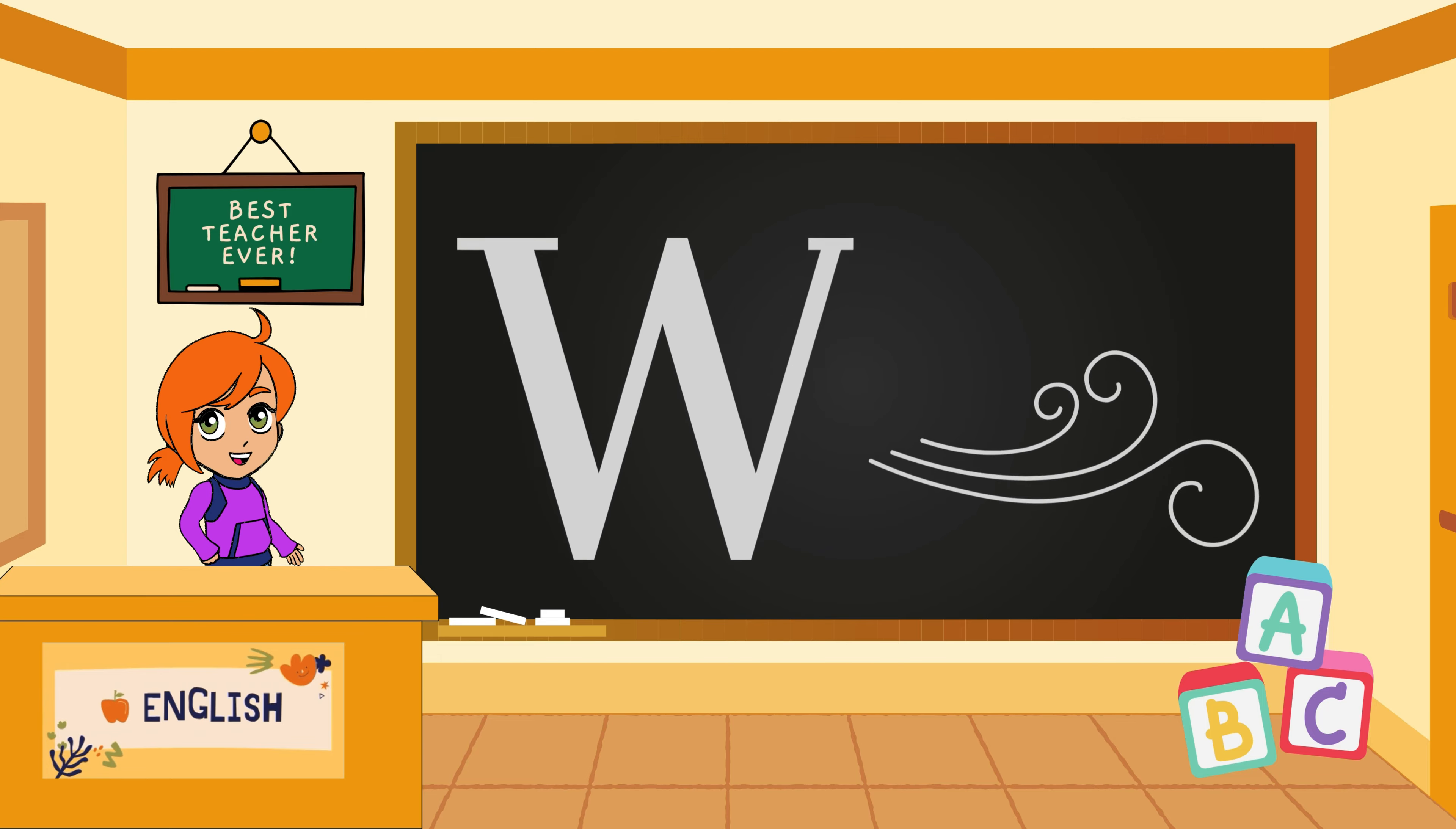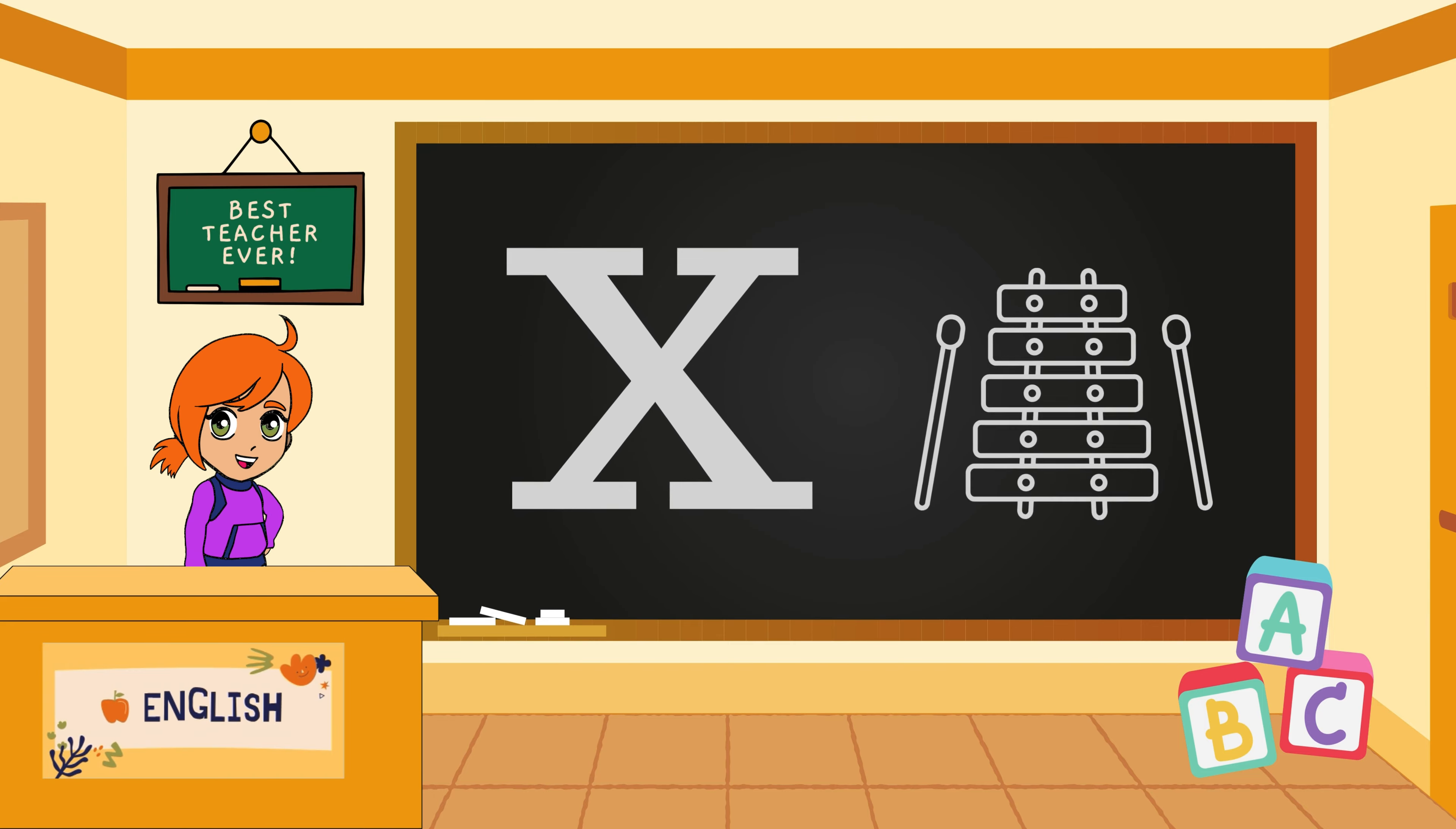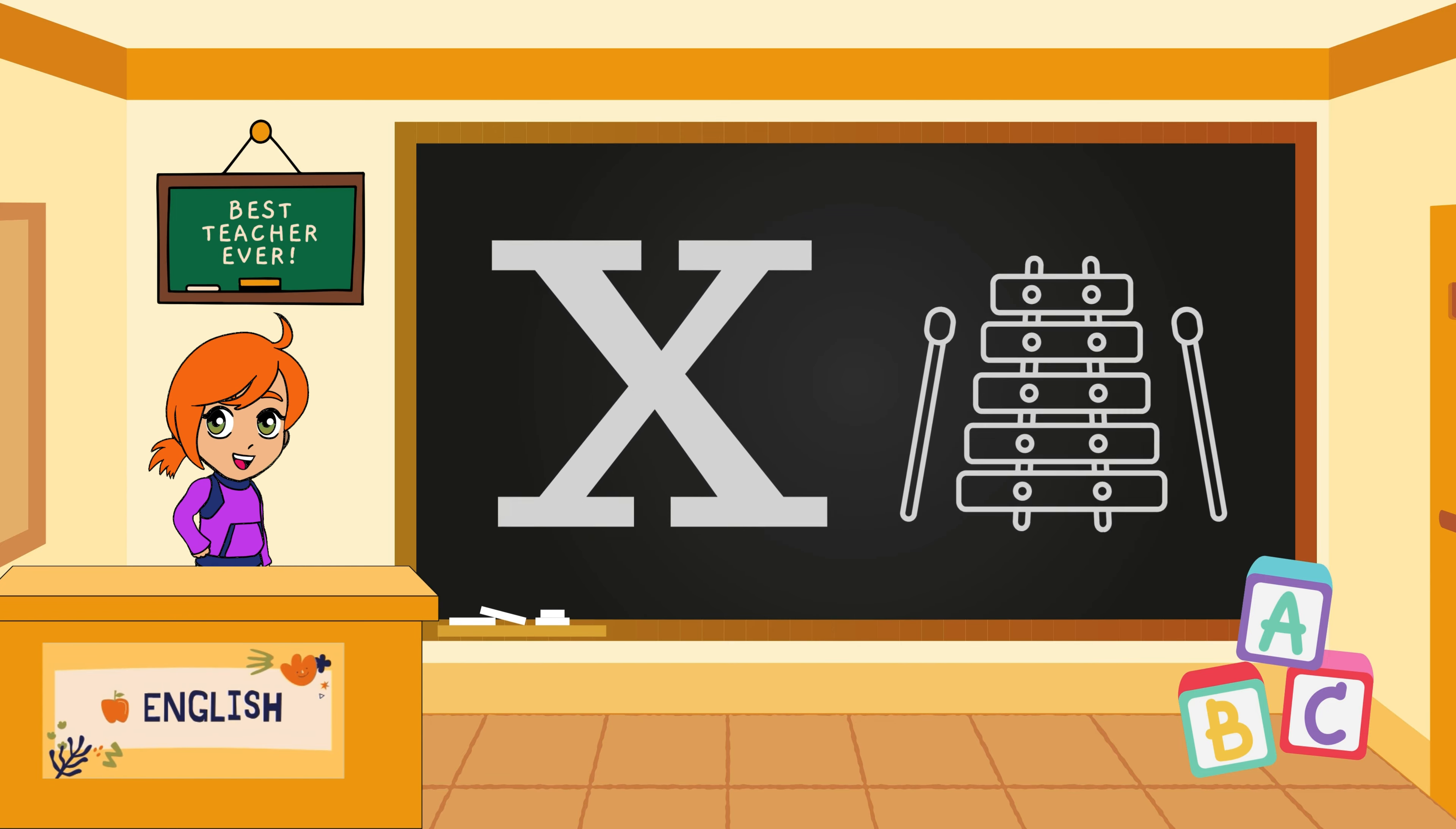W represents the waving wind. Imagine the wind blowing through the air. W makes the sound wuh. X brings the magic of a xylophone. Picture the colorful keys of a xylophone. X makes the sound ks.